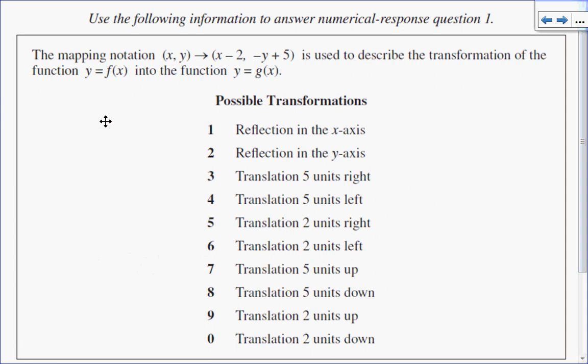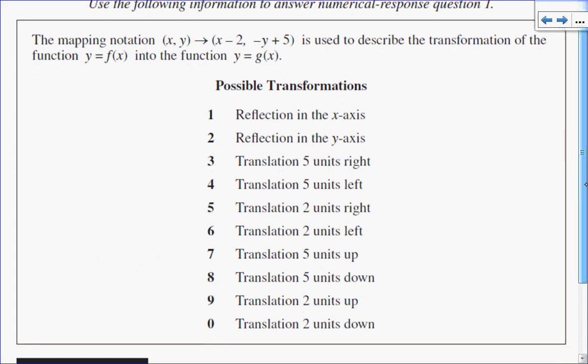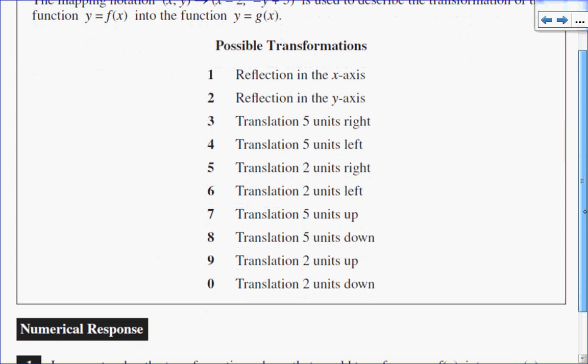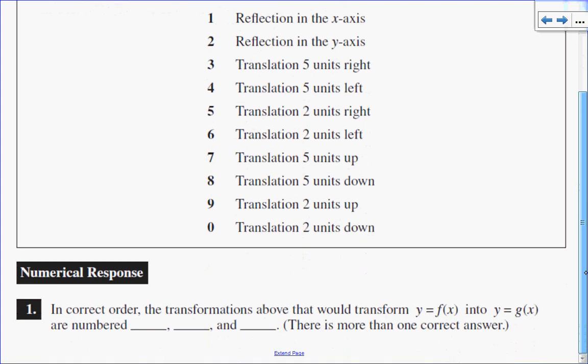In this question, we have a mapping notation (x, y) → (x - 2, -y + 5). It's used to describe the transformation of a function y = f(x) into a function y = g(x). We have 10 different possible transformations listed.